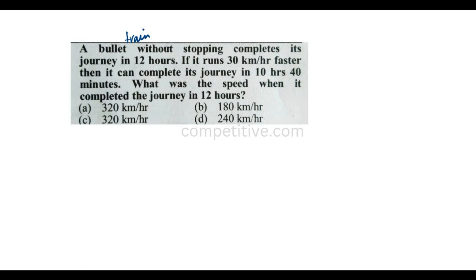A train is going a certain distance non-stop. We need to find the distance. There is a speed, and when the speed increases by 30 km/h, the time changes.